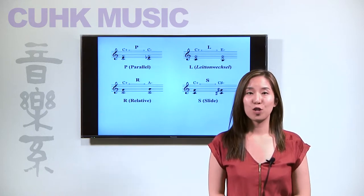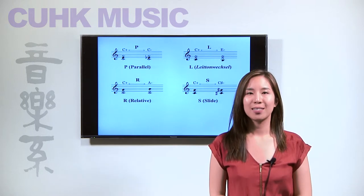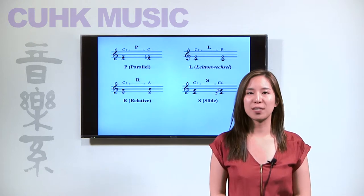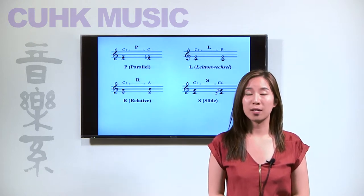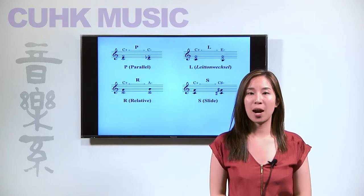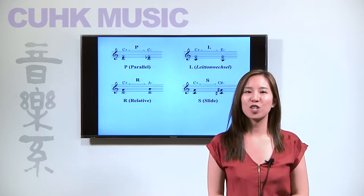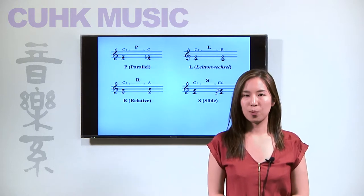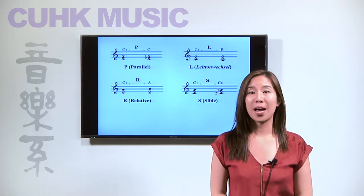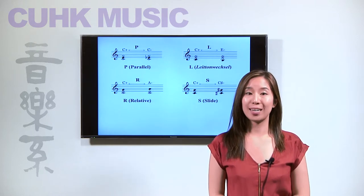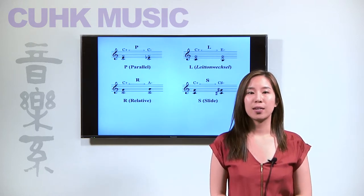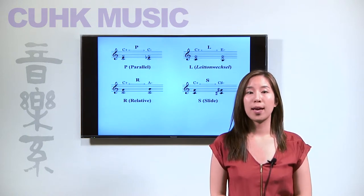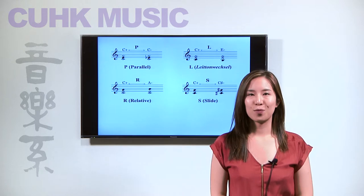The fourth triadic transformation is called S, slide. This transformation involves two voices rather than just one. It relates a major triad and a minor triad that share a common tone, which is the third of the chord. For example, C major and C sharp minor triads keep the common tone E while C and G, the fifth spanning the triad, moves to C sharp and G sharp or vice versa.